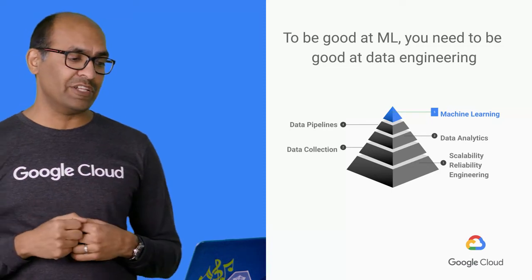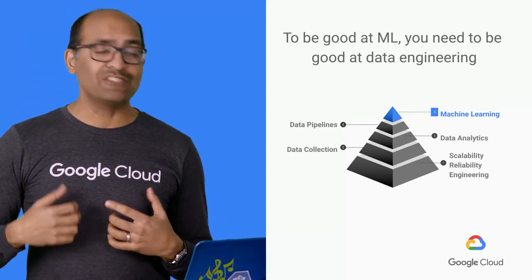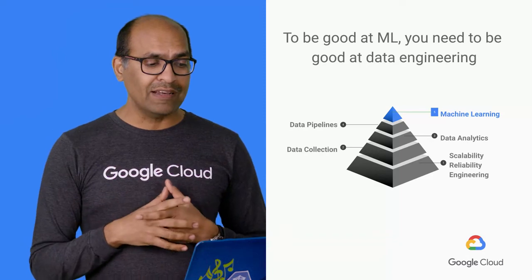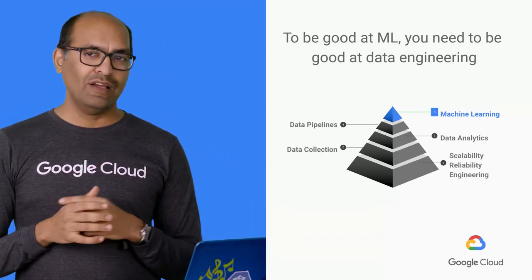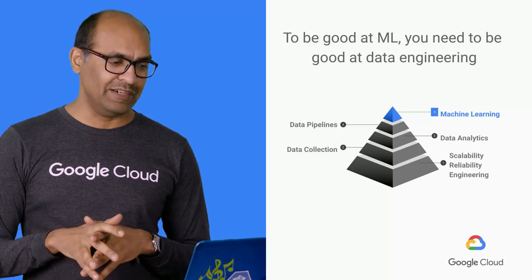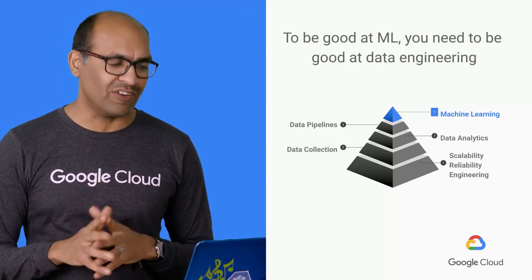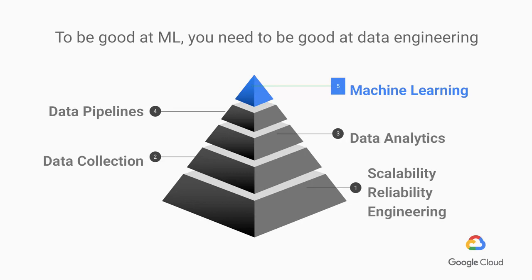If you haven't taken our data engineering specialization on Coursera, I strongly encourage you to take it. But in this track, we'll cover the key pieces as we go along. Fortunately for those of you data scientists out there, data engineering is not that hard to learn. On GCP, the key services are all serverless and managed infrastructure. In this course, we will show you how to build batch and streaming data pipelines. By building your data pipelines in Google Cloud, you essentially get to take advantage of the scalability, reliability, and sheer engineering prowess that Google brings to running machine learning systems.